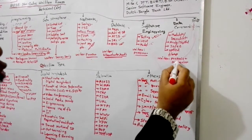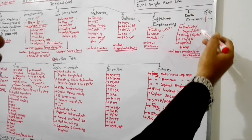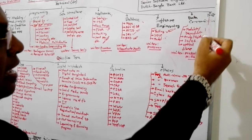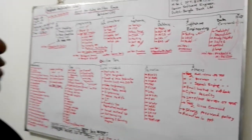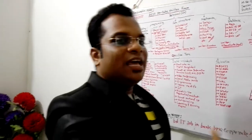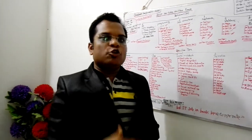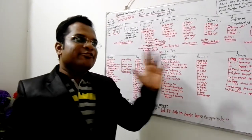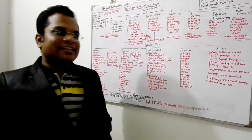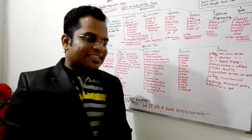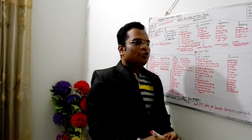Data communication topics include modulation and demodulation, analog and digital signals, 3G, 4G, 5G, optical fiber, and cable types. For digital logic design (DLD), topics include universal gate implementation, NAND gate implementation, flip flops, excitation tables, and characteristics tables.